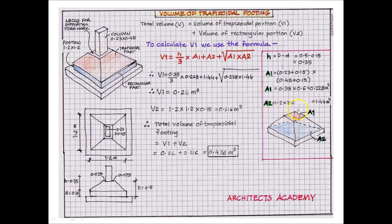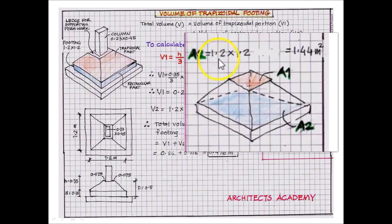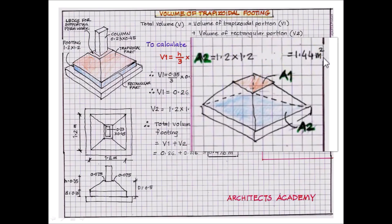To calculate area a2 at the bottom, we know the footing size is 1.2 meters by 1.2 meters. So a2 = 1.2 × 1.2 = 1.44 square meters.